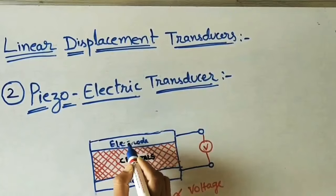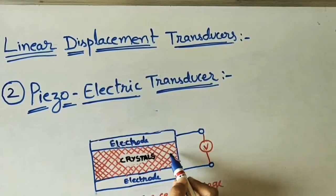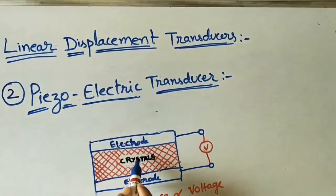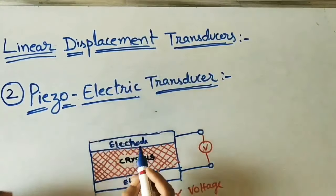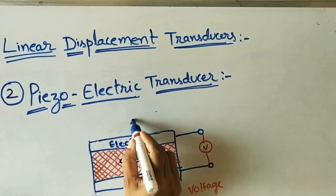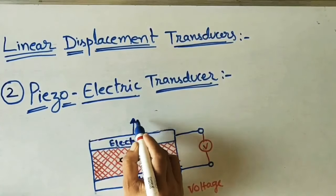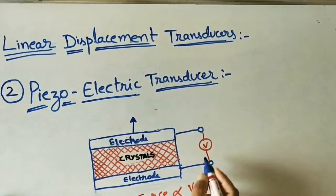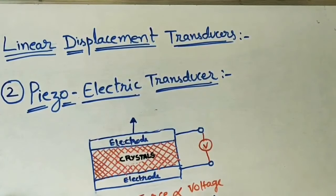In the reverse case, I apply some voltage as input to the electrode. Because of this voltage, the crystals change their orientation — they take the electrical energy and displace their position. Because of this displacement, the gap between the electrodes becomes larger. A scale is used to measure how much displacement occurs, or how much force magnitude can be determined. So in the second case, the input is voltage and the output is displacement or force.